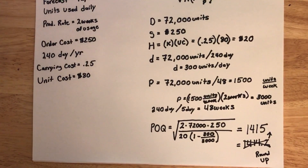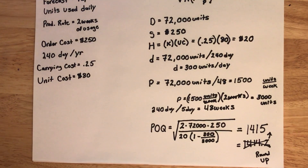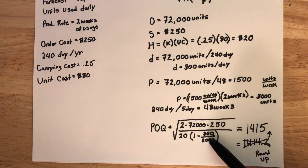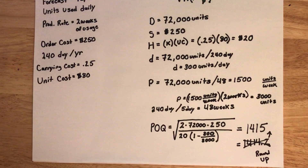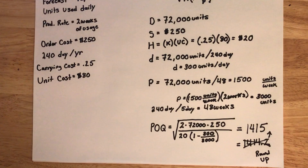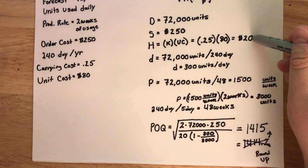And so that is all there is to this example of POQ. Remember, the most important thing is to pay attention to the production rate — if you calculated the production rate for one week and used that number (1,500), that would not be correct, because that's only for one week of usage. Also, for the holding cost, remember that it is not 0.25 — that is just the carrying cost rate. We still have to multiply that by the unit cost to get the holding cost per unit per year.